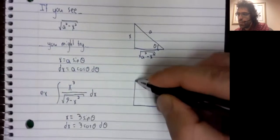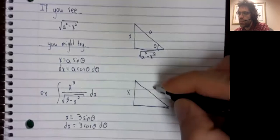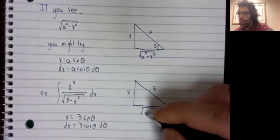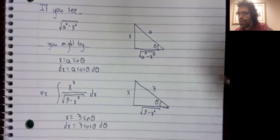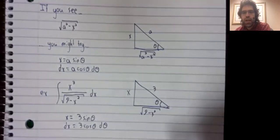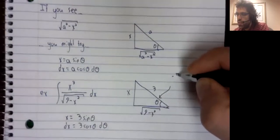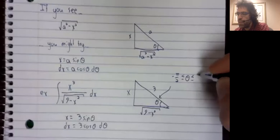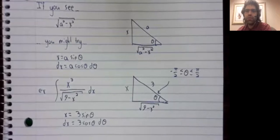And our picture is x, three, the square root of nine minus x squared, and theta is here. When we do this trigonometric substitution, we always make a technical assumption that theta is between negative pi over two and pi divided by two.